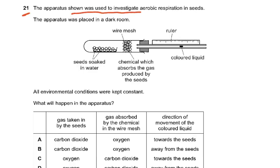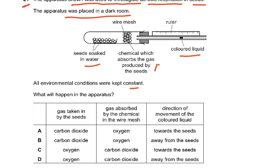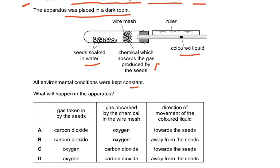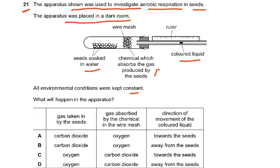Question 21. The apparatus shown was used to investigate aerobic respiration in seeds. The apparatus was placed in a dark room with wire mesh, a chemical which absorbs the gas produced by the seeds, colored liquid, and seeds soaked in water. All environmental conditions were kept constant. What will happen in the apparatus? Since we are studying aerobic respiration, the gas taken in by the seeds will be oxygen, the gas absorbed by the chemical in the wire mesh will be carbon dioxide, and the colored liquid will move towards the seeds.